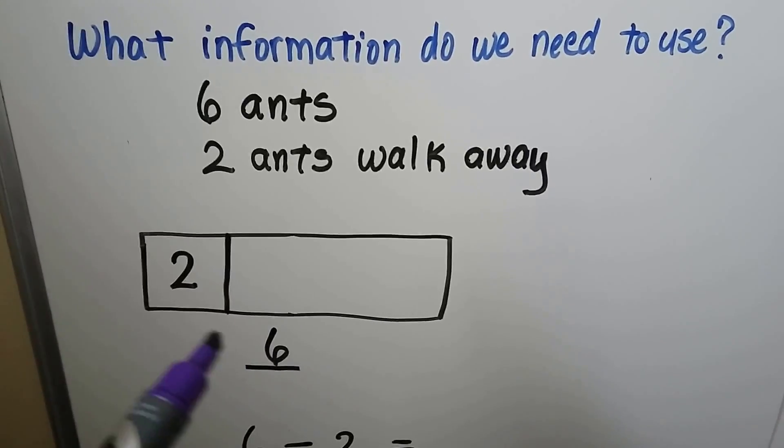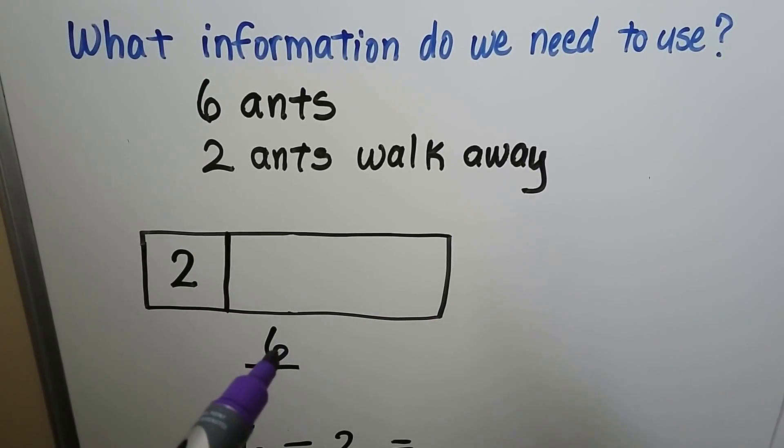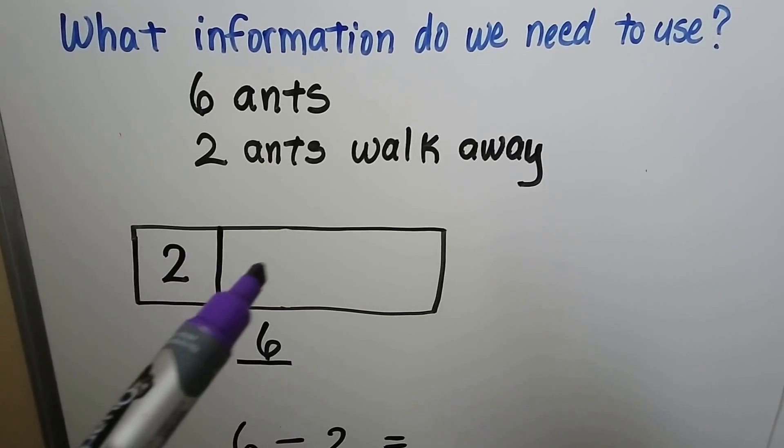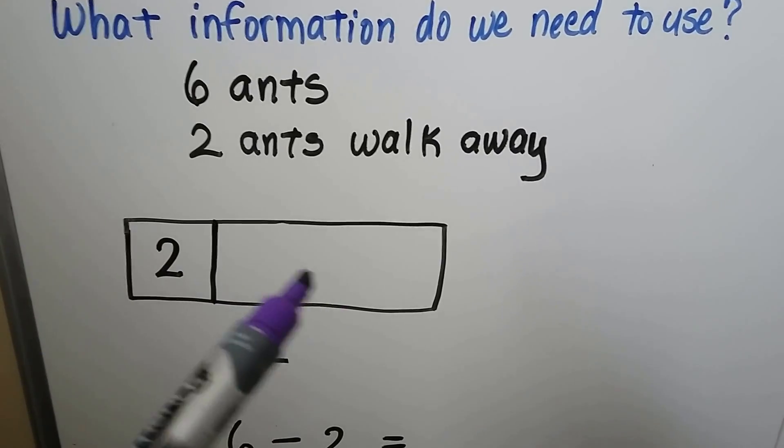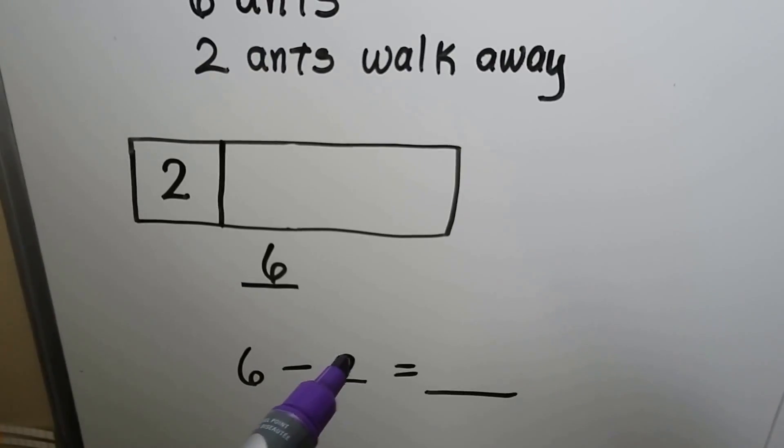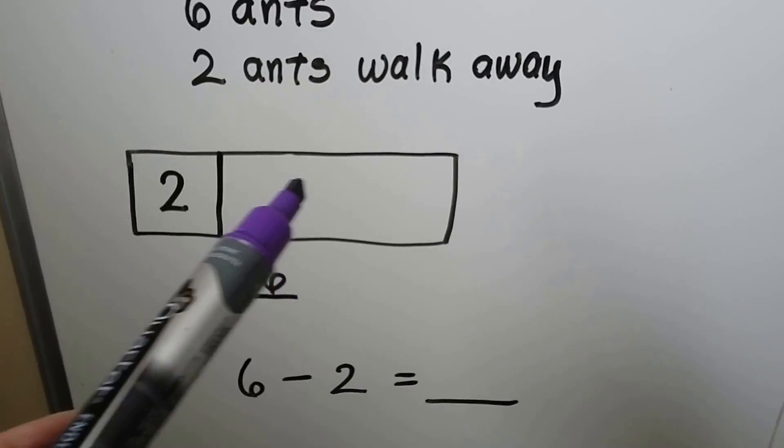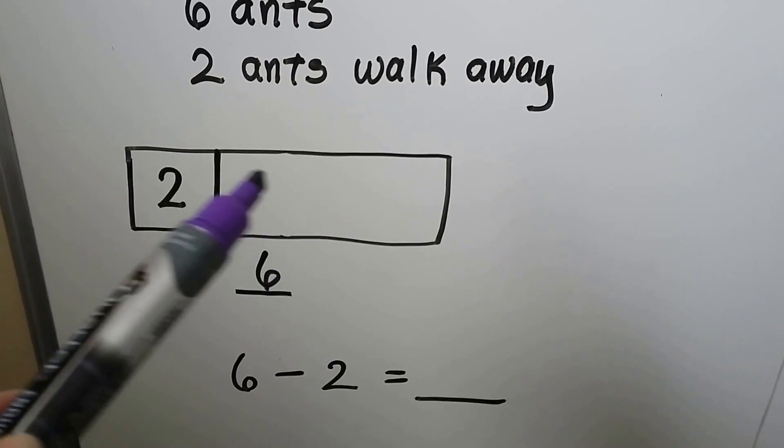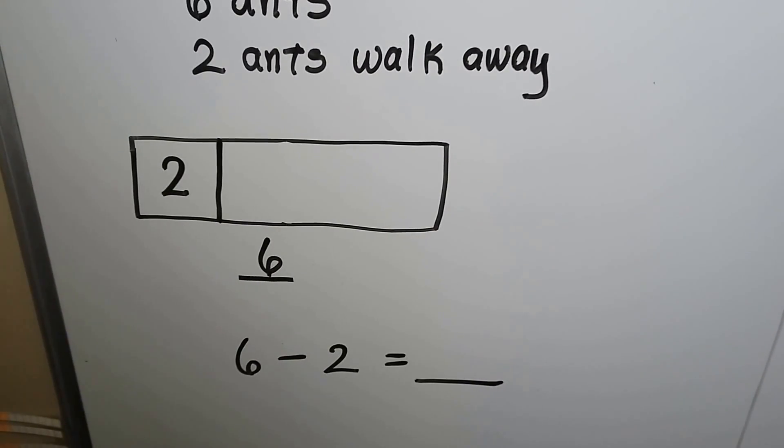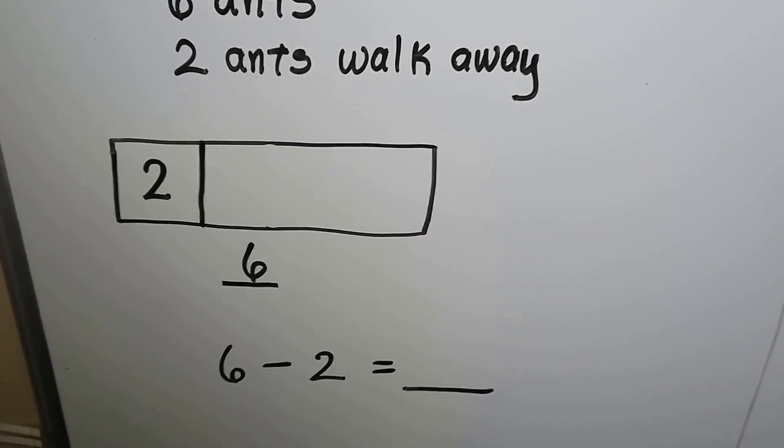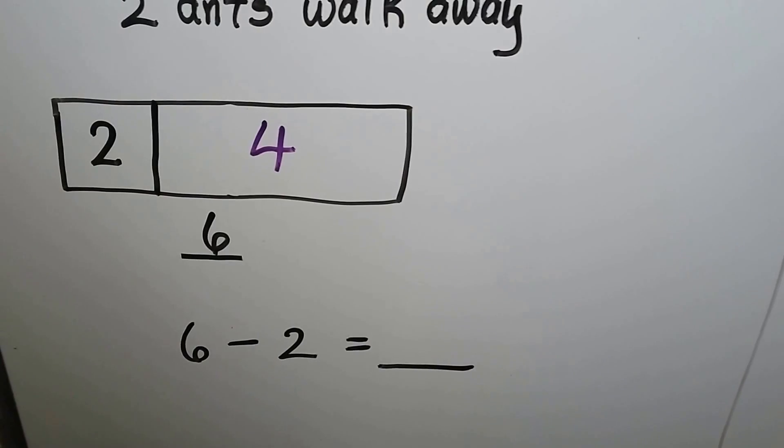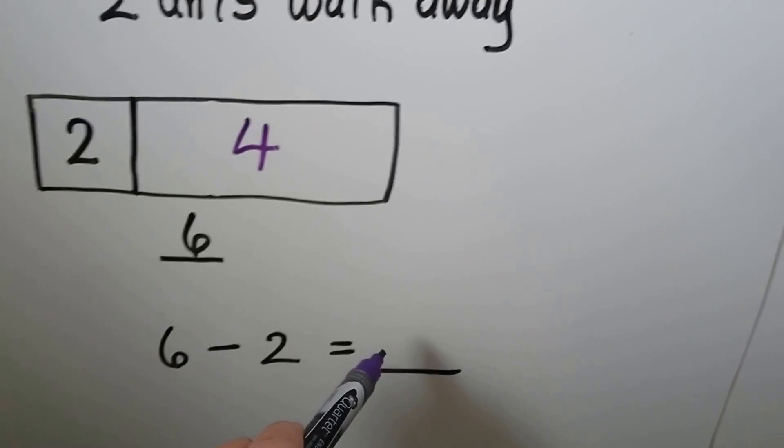The bar model shows how many in all, that's the number here, the six. Here's the two that walk away. We need to find this amount. Six minus two is equal to... What number could go here with two that would make a six? A four. Six minus two is four.